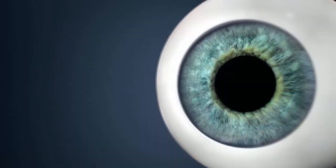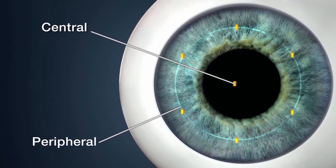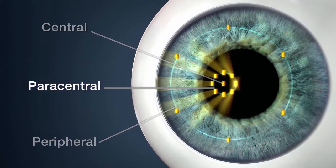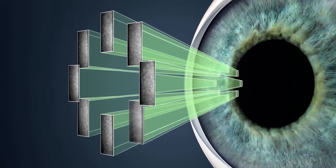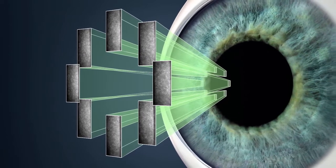While other specular microscopes may have central and peripheral imaging, the CEM530 incorporates paracentral imaging. Paracentral images are captured from 8 points at a 5-degree visual angle for enhanced assessment around the central portion of the cornea.